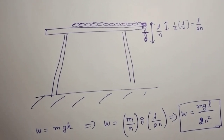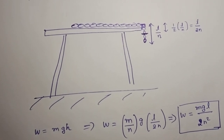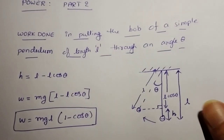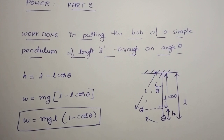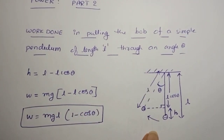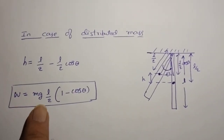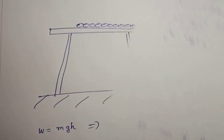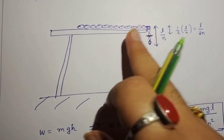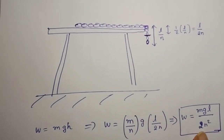In this video we have learnt to calculate work done in different cases. Work done in pulling a bob through an angle theta is MgL into (1 minus cos theta). For a distributed mass, work done is MgL by 2 into (1 minus cos theta). Work done in pulling the hanging portion of a chain back onto the table is MGL divided by 2n squared.